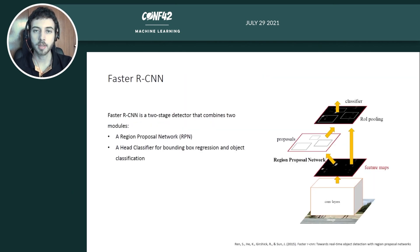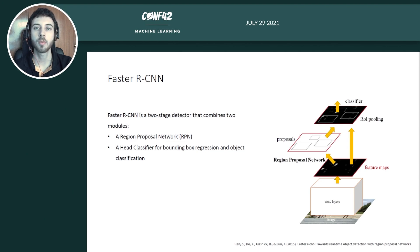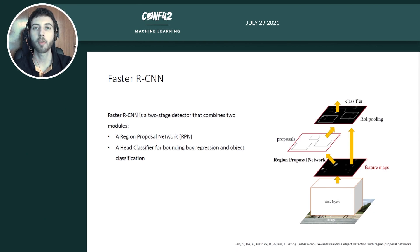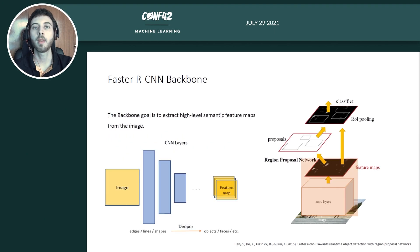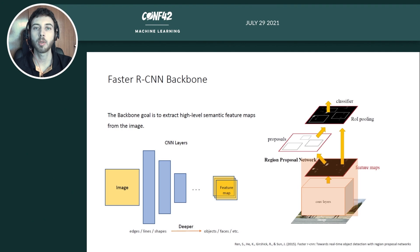The first model we are going to discuss is the FasterRCNN, a two-stage object detector that employs two modules: a region proposal network and a classifier head that does bounding box regression and object classification. We will follow the typical data flow of the image as it goes through the architecture. The image first goes through the backbone, whose goal is to extract high-level semantic feature maps from the image.